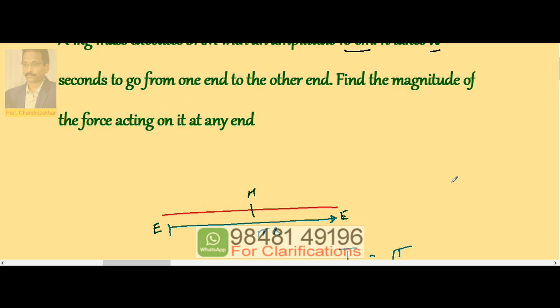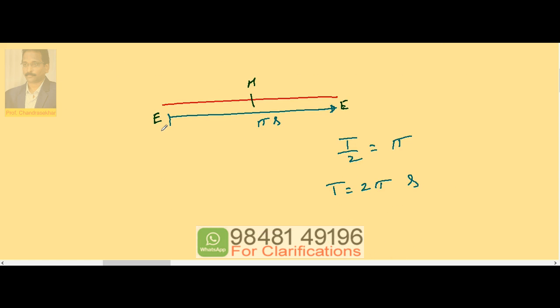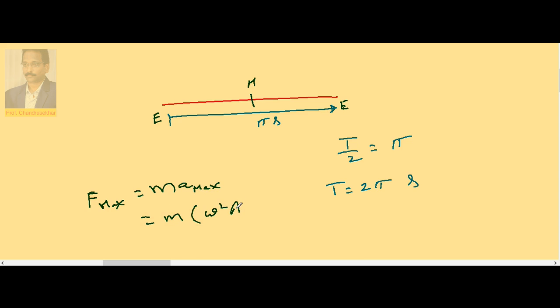Now, the question is what is the magnitude of force acting on it at one end. At the extreme, we know that force is maximum. Force at end, that is maximum force, which is equal to M A maximum. It is M into omega square A.